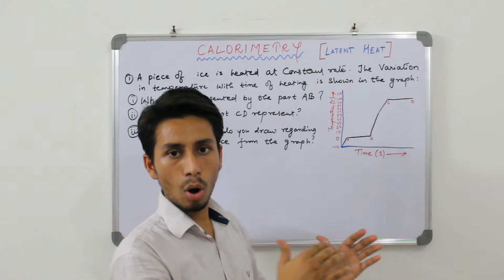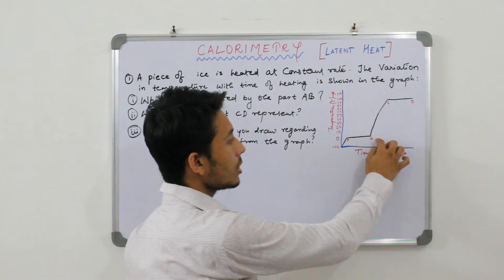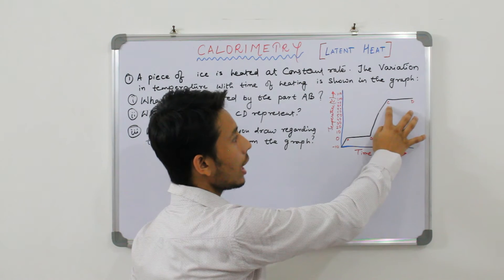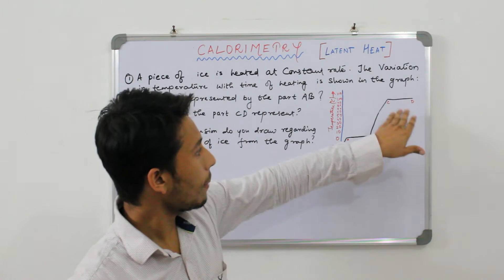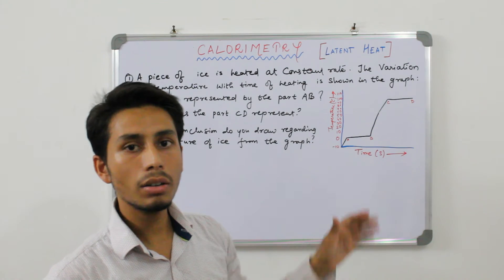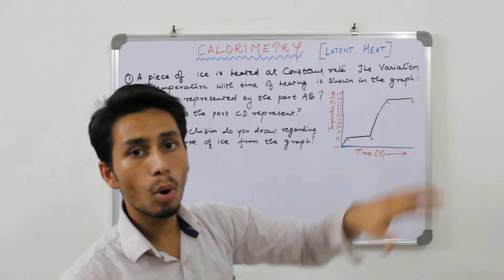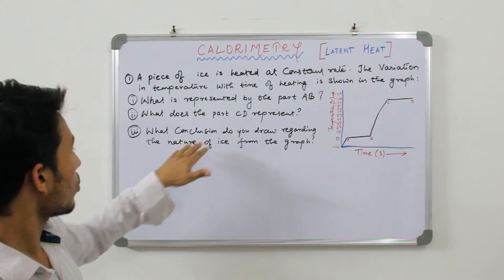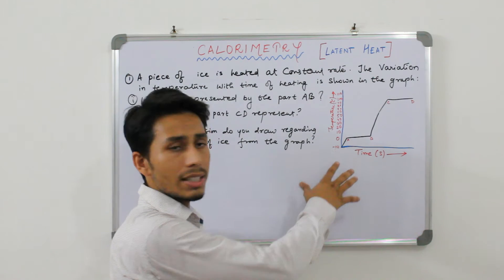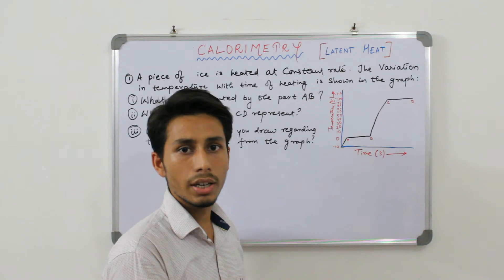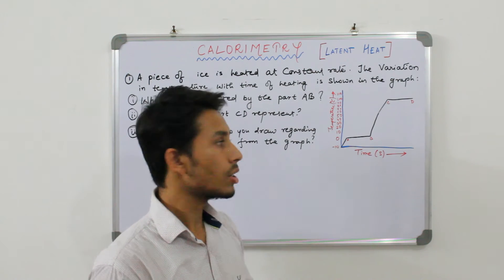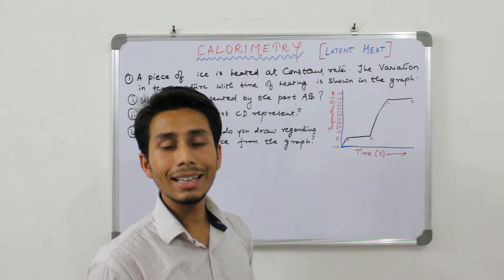On further heating, the ice has been converted into water, so the next section represents the temperature rise of water. Then we have CD — you can see again a flat or straight line, meaning water is absorbing heat energy to boil. So CD represents the boiling of water. The conclusion regarding the nature of ice is that ice is initially at minus 10 degrees centigrade in solid state, and on heating it absorbs latent heat energy at 0 degrees centigrade to convert into water.